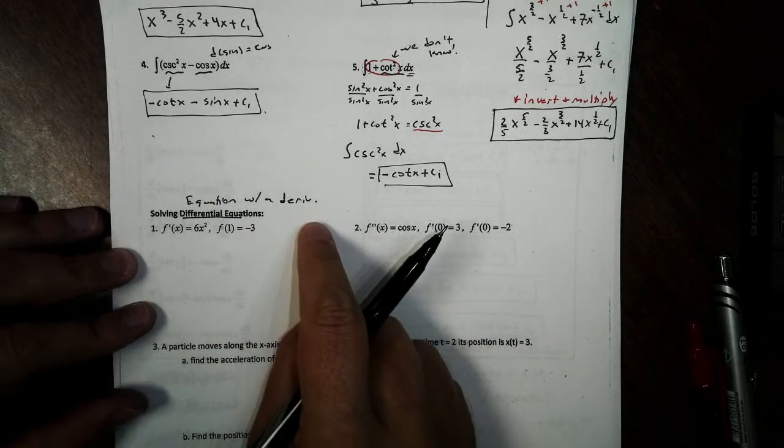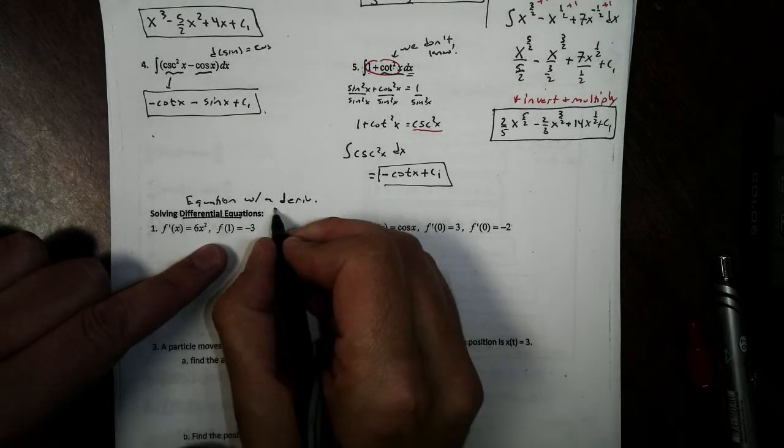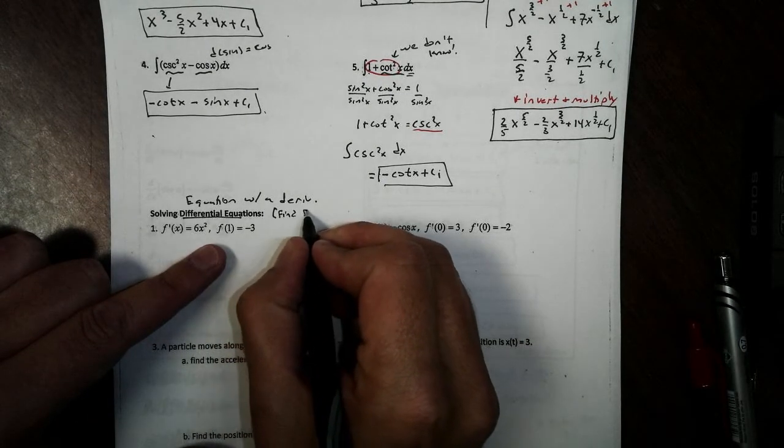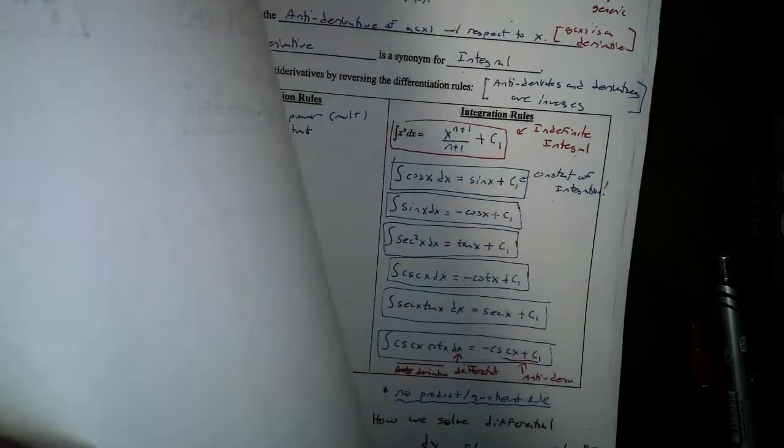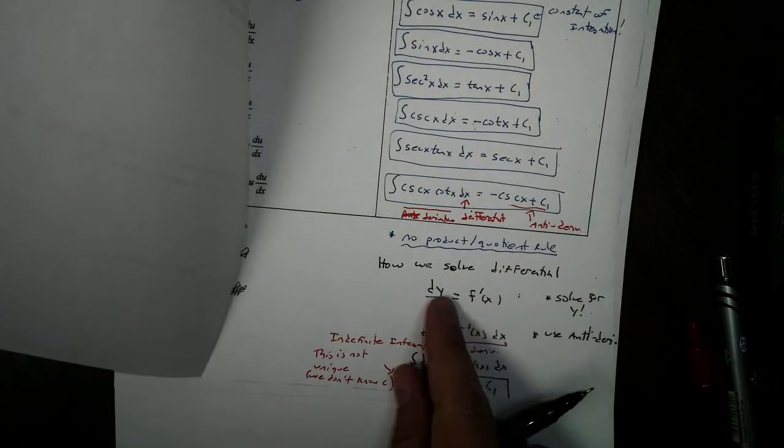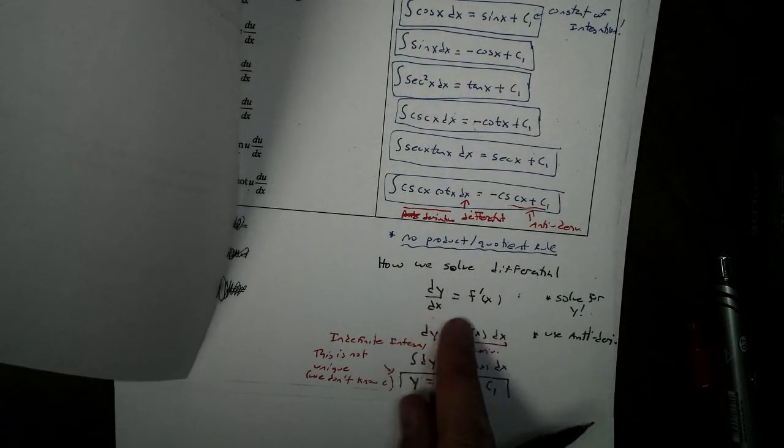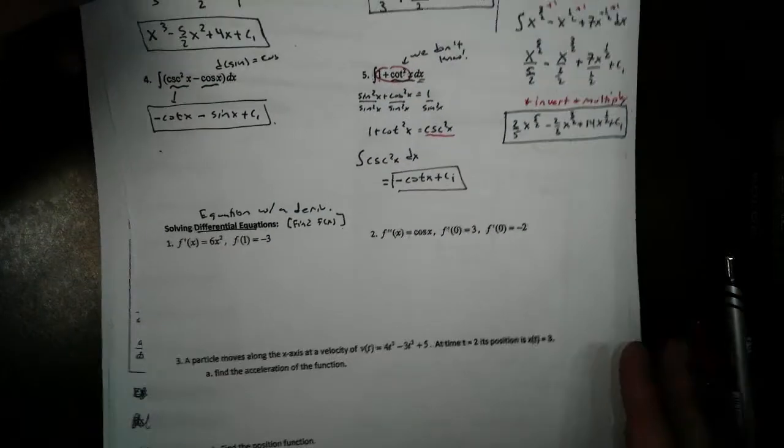So in order to solve them, what we're asked to find is the original function, f of x. We talked about this in part one when we said how do we solve a differential. Notice we're going to write this as dy dx, and we're going to solve for y. That's what we're going to do here.